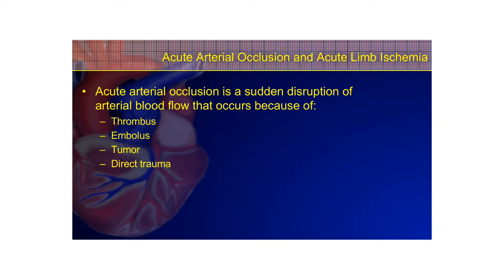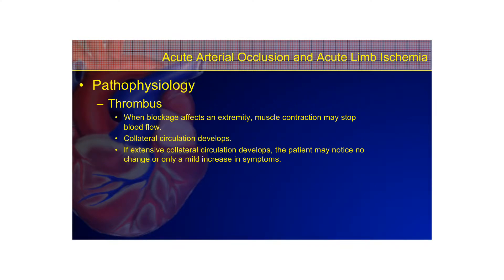An occlusion can be a sudden disruption of arterial blood flow that occurs because of a thrombus, an embolus, a tumor, direct trauma to an artery, or unknown factors. A thrombus is a clot that doesn't move — it occurs at the site where it stays — and an embolus is a thrombus that breaks off and flows throughout the body.